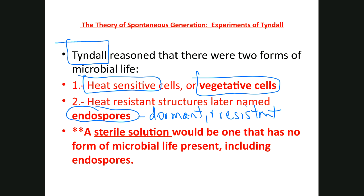Endospores are resistant to heat — that's what was surviving the boiling. The minute the heat dwindled and the endospores activated again to become vegetative cells, the solution became cloudy. In microbiology, when we say something is sterile, we mean there are no forms of microbial life present, including endospores. We are able to destroy endospores, but that requires special steps. When we destroy endospores and all other forms of microbial life, we call that sterile.